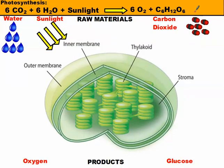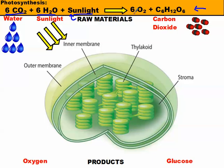Photosynthesis has an equation, shown here. On the left we have the raw materials — the ingredients needed to carry out the reaction. We need six molecules of carbon dioxide, six molecules of water, and sunlight. These raw materials undergo a reaction and create products: six oxygen molecules and one glucose molecule. This is why plants carry out photosynthesis — they want that glucose molecule because it's the sugar they need to make energy.